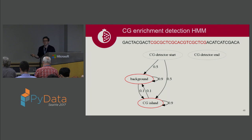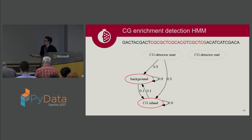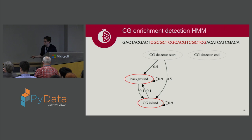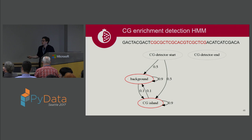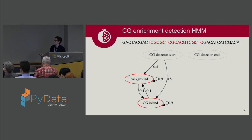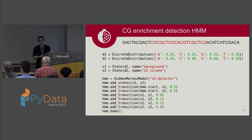A simple example: looking for CG islands — parts of the genome with more C's and G's than A's and T's. In the real human genome, more functional elements often have more C's and G's. We model two states: CG island and background. In a CG island we have a 90% chance of staying in an island and 10% chance of switching; in the background, 90% chance of staying and 10% of switching; starting in either state with 50% probability.